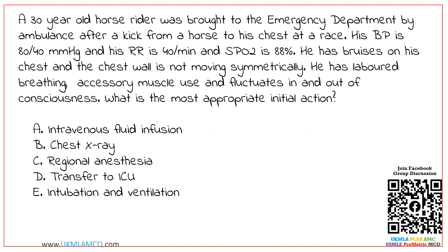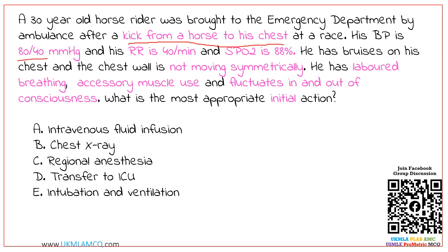As in my MCQ series, the first step is to identify and underline the main keywords. The key findings here are: a kick from a horse to his chest, blood pressure of 80 by 40, respiratory rate of 40 per minute, and saturation of 88% — all are important findings.